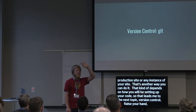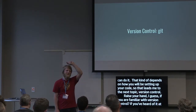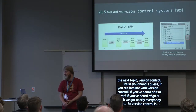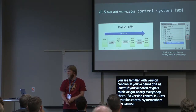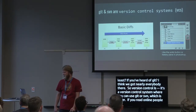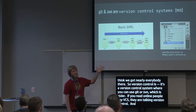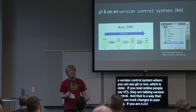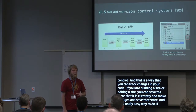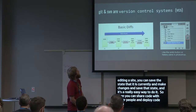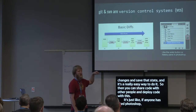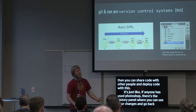Raise your hand if you're familiar with version control — if you've heard of Git. A version control system like Git or SVN lets you track changes in your code. You can save the current state, make changes, then save that new state. It's really easy to share code with other people and deploy code this way. It's like Photoshop's history panel where you can see your changes and go back steps — but for code.